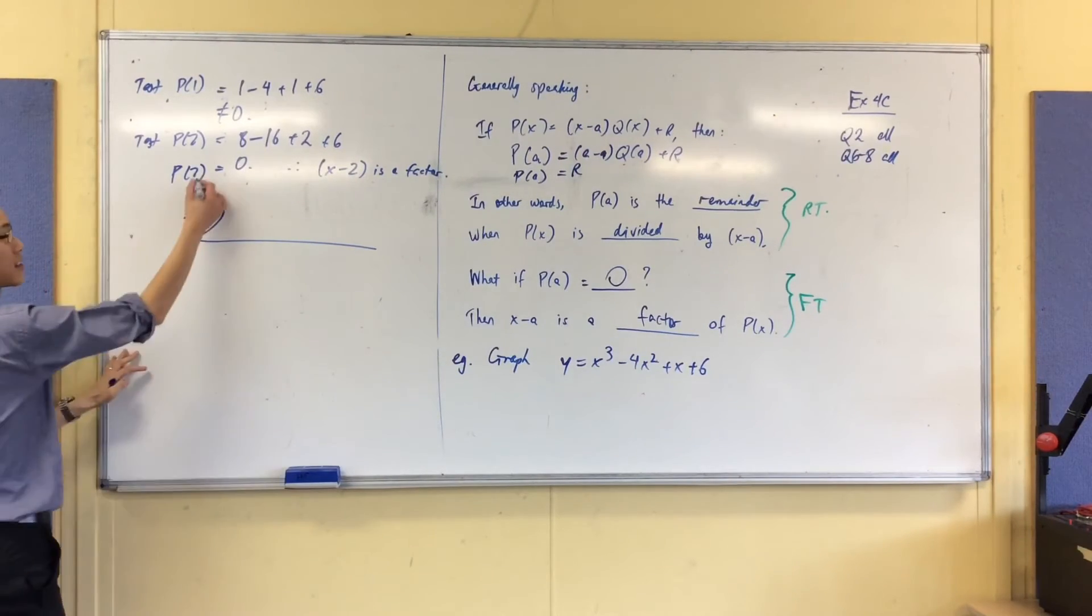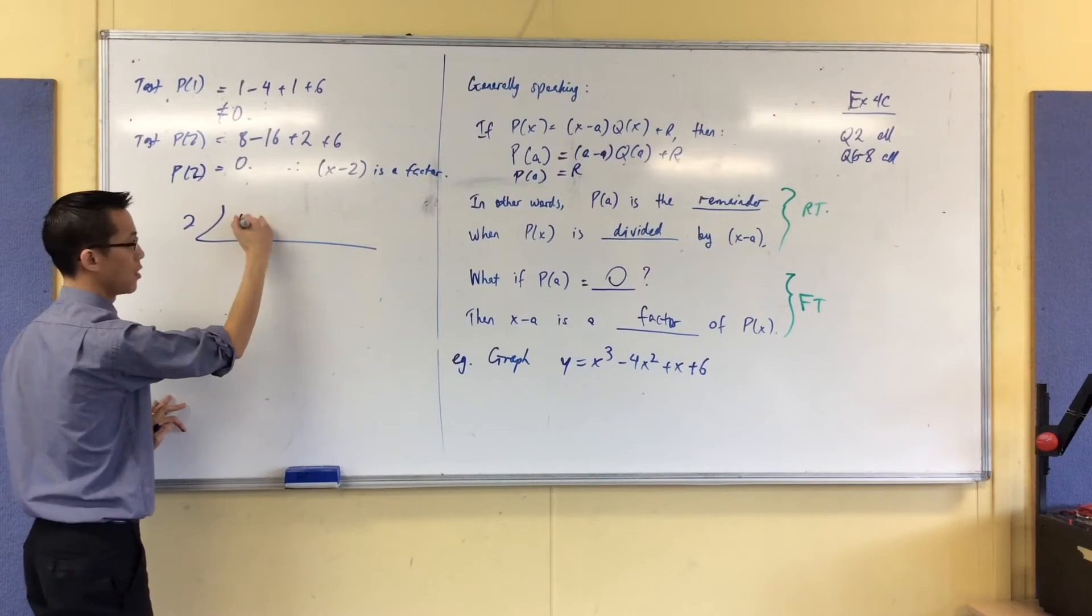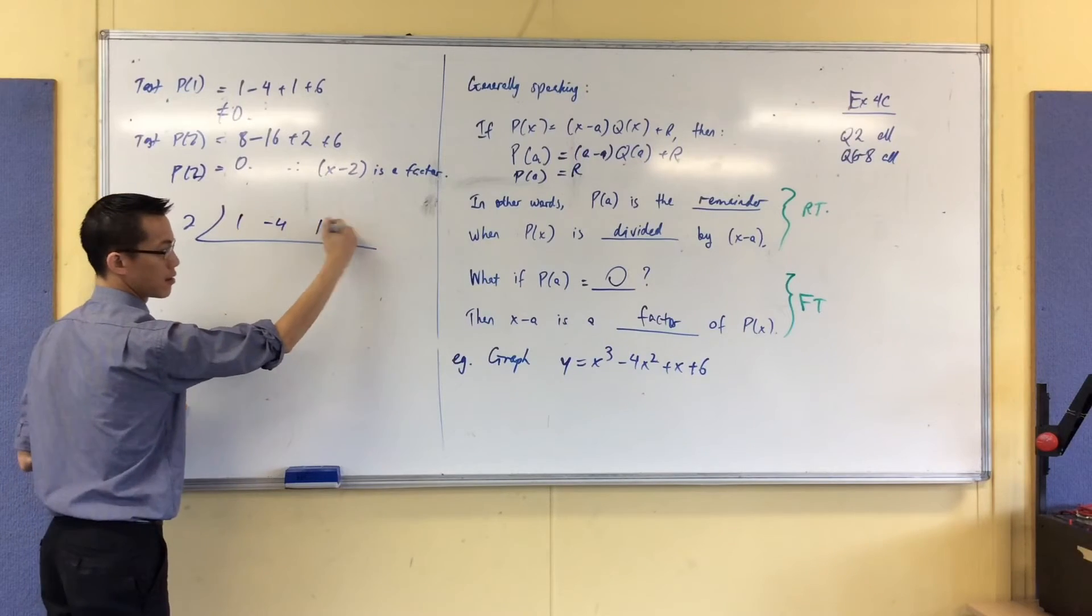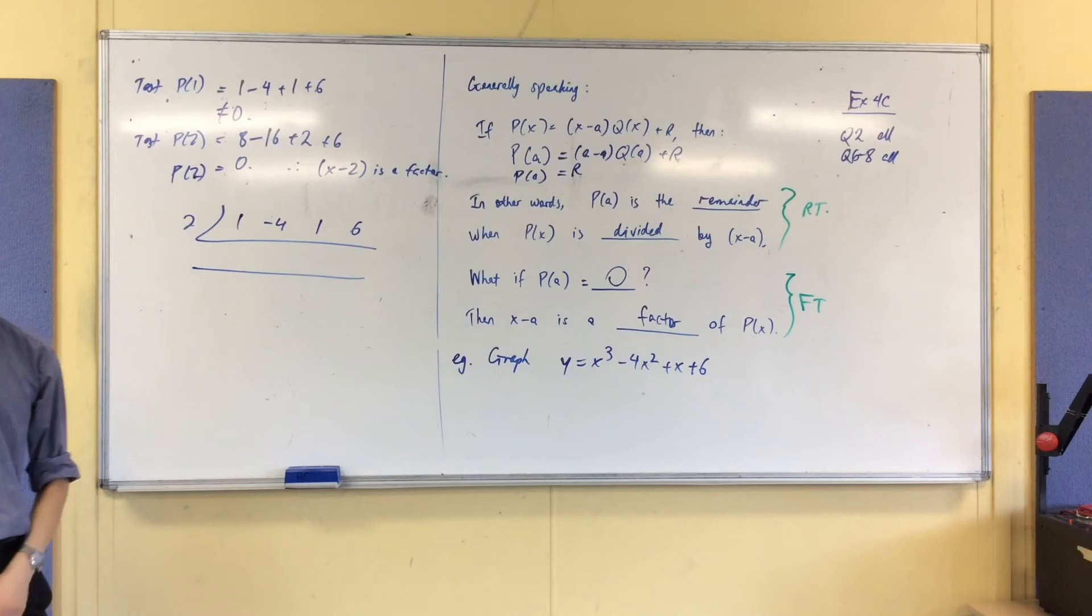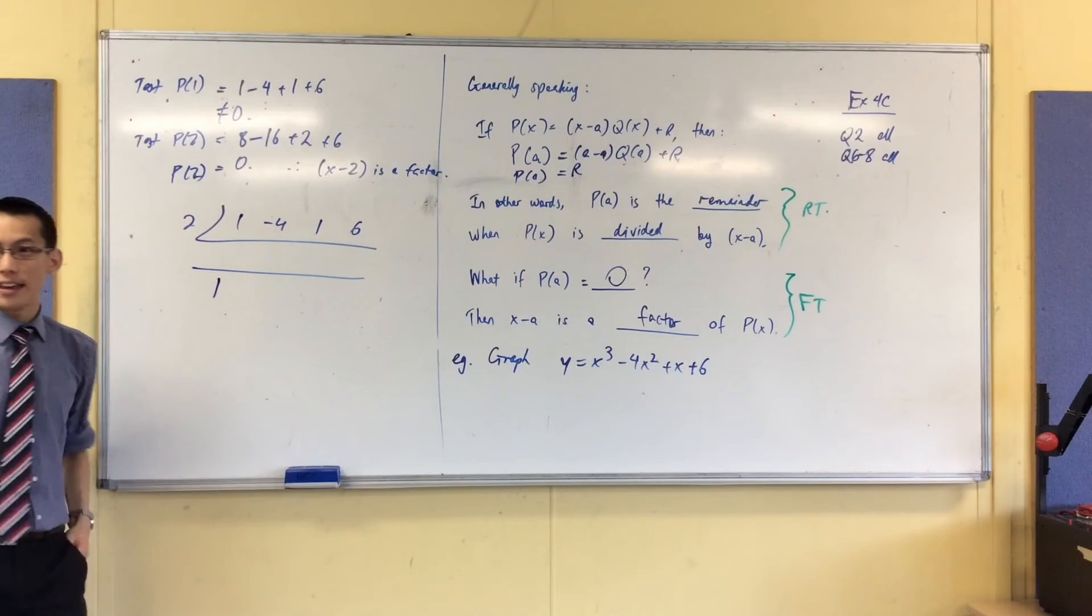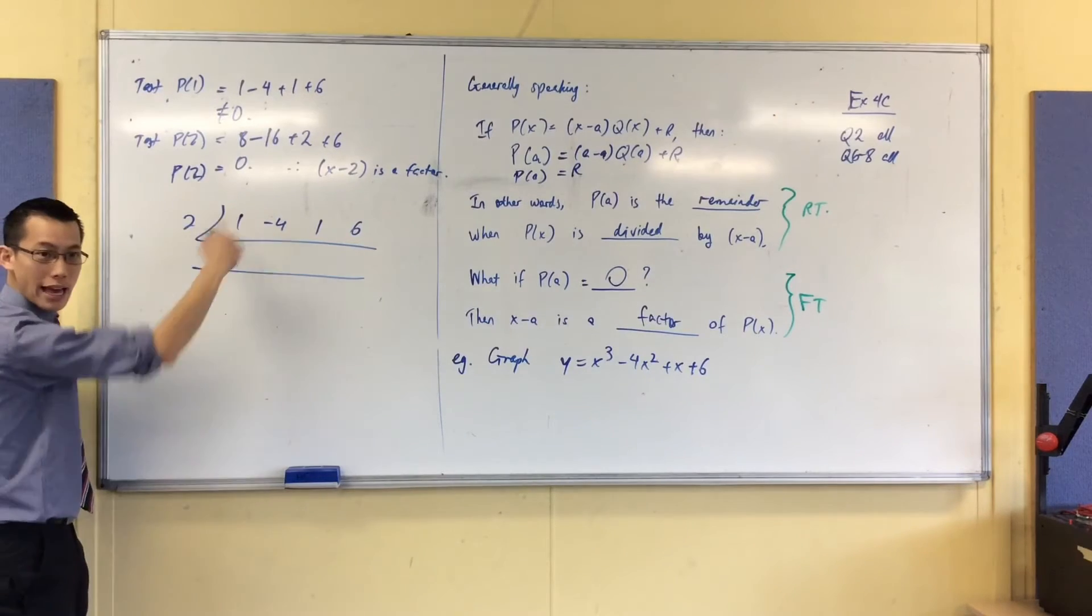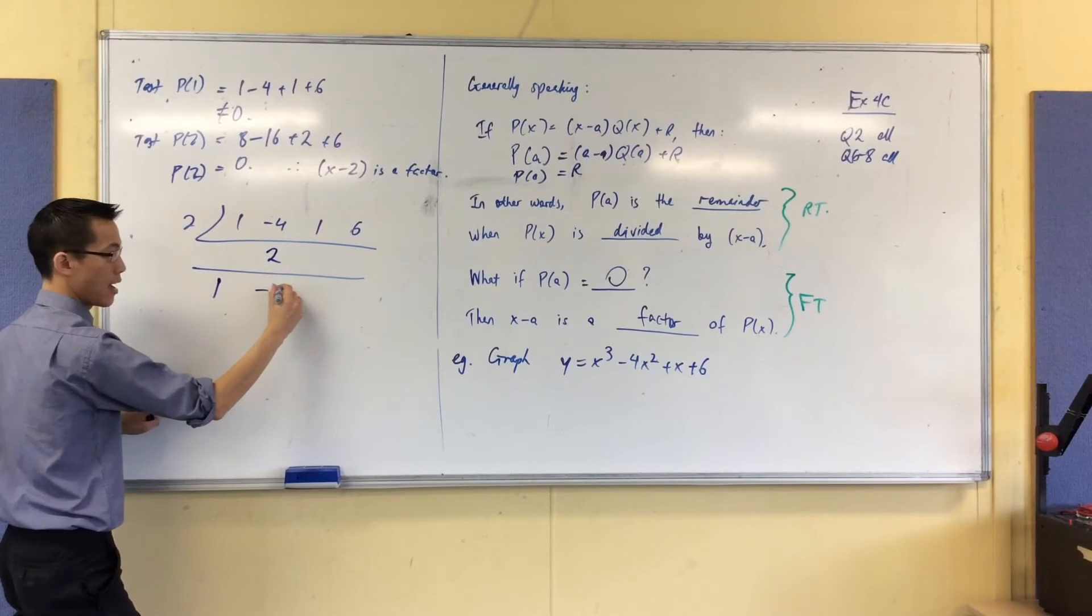2 is the 0 of this. In fact, it's just the number that I stuck in here before. And then, I want my coefficients, which are, read them out for me. 1, minus 4, 1, 6. What's the first step in synthetic? You just write down the leading coefficient. And then, here comes our iterating step. Multiply, add, multiply, add, multiply, add.